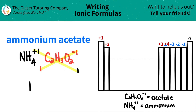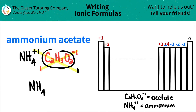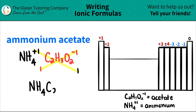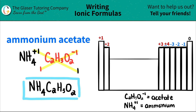We have NH4. Since I only have one of them, I don't need to use parentheses, so I just keep rolling on. Next comes acetate — I see that I only have one of these, so I don't need parentheses. So it's C2H3O2. And that's it. Ammonium acetate is NH4C2H3O2.